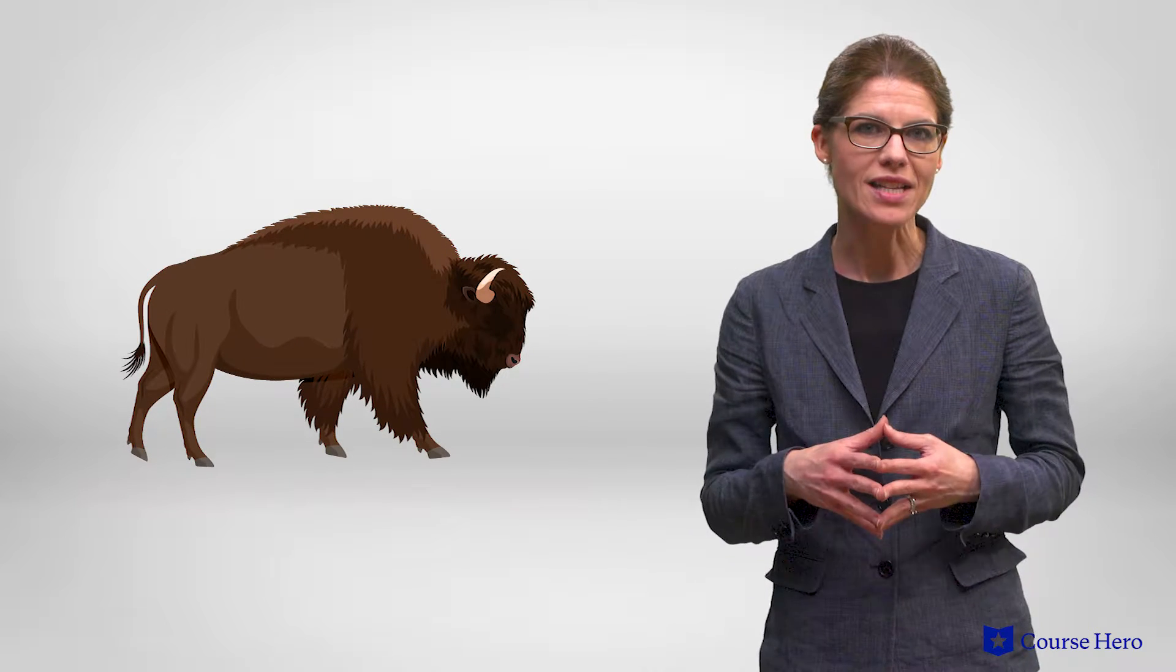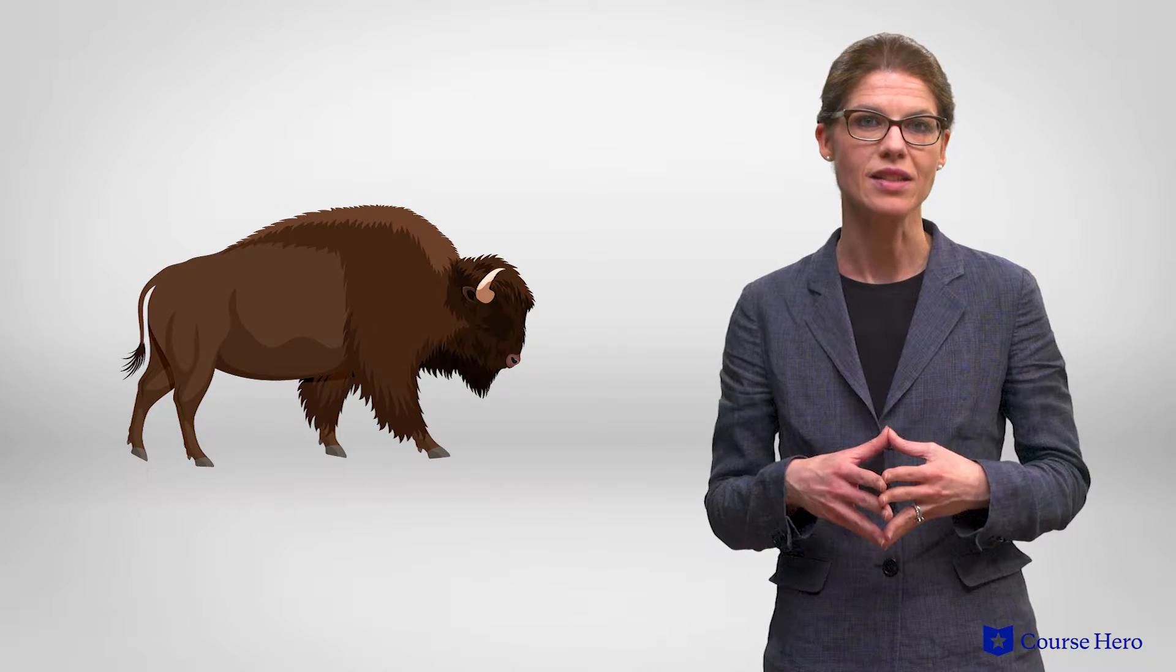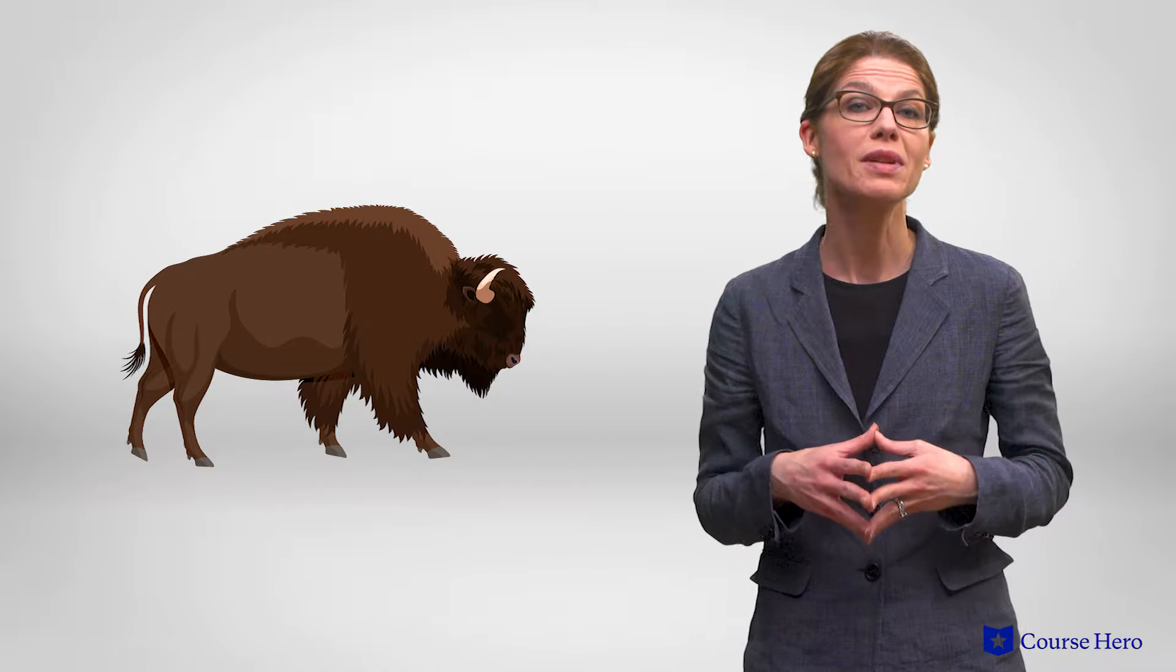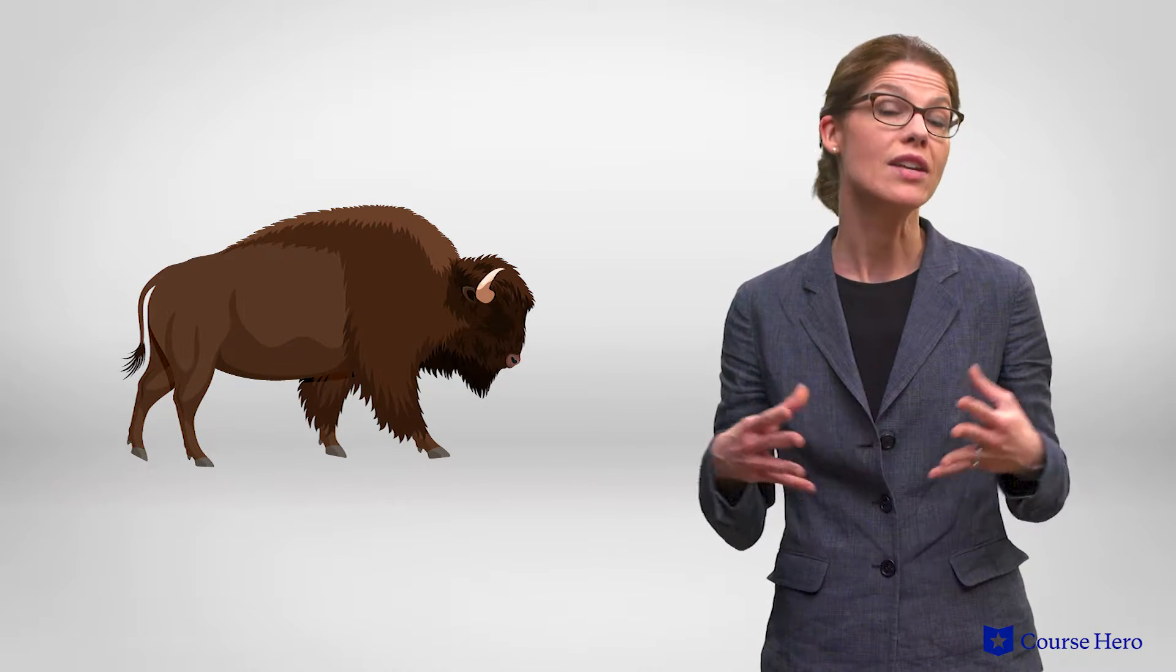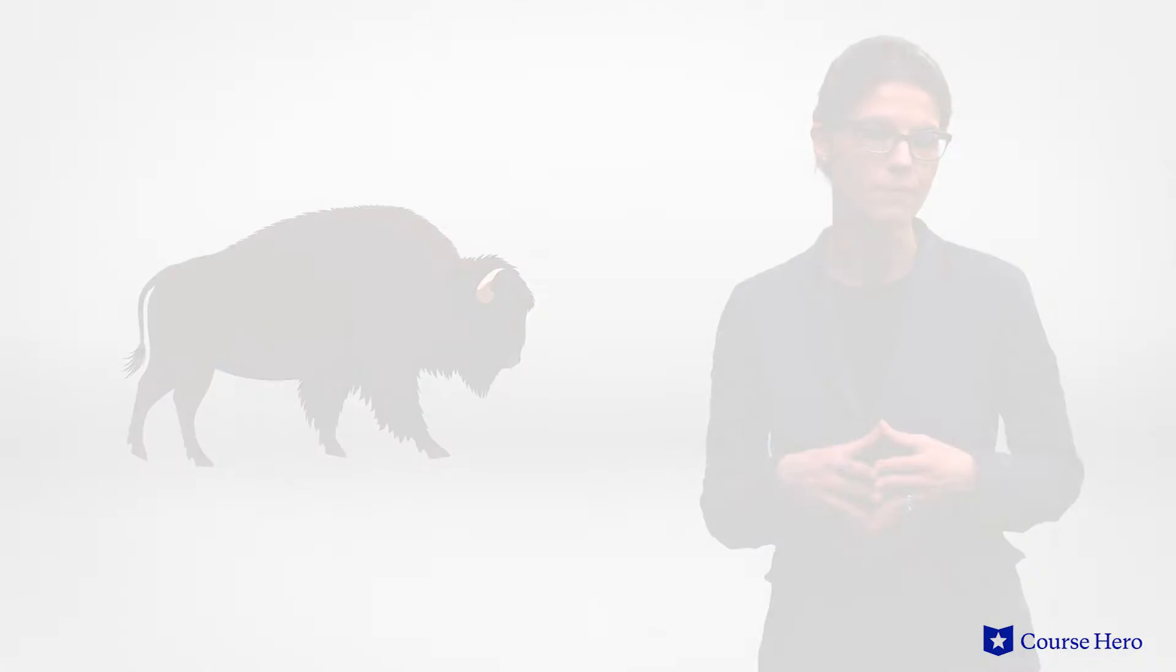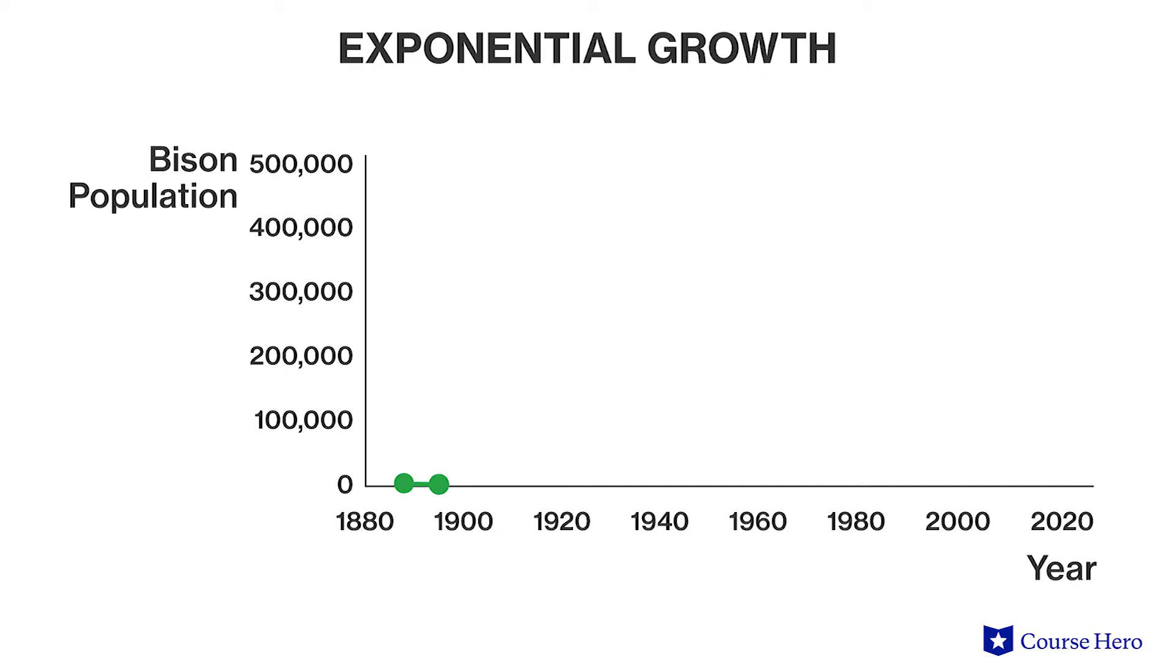The American bison is a case study in exponential growth patterns. At one point, the bison population on the Great Plains ranged between 15 million and 100 million individuals. But human interference reduced this massive population to about 1,000 bison by 1888.